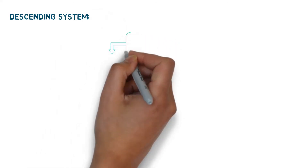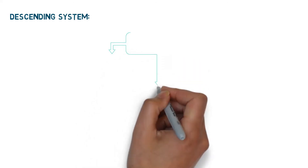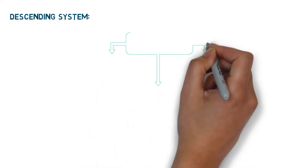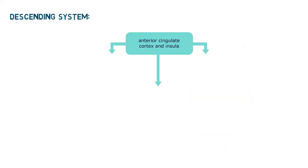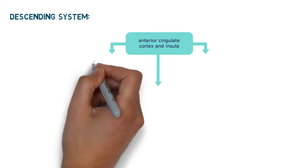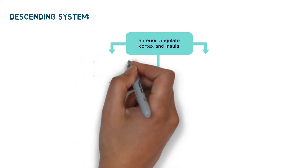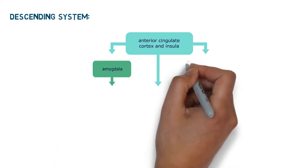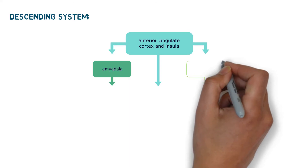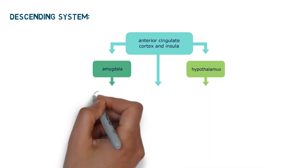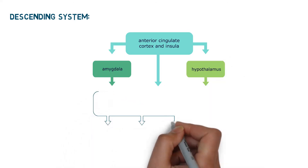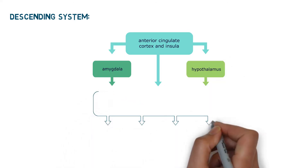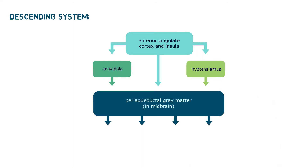This system starts with the anterior cingulate cortex and the insula. This area sends modulatory signals to the amygdala, hypothalamus, and the periaqueductal gray matter of the midbrain. This will dampen the fear factor from the amygdala, release hormone factors for body homeostasis from the hypothalamus, and quiet some of the pain by stimulating the periaqueductal area.